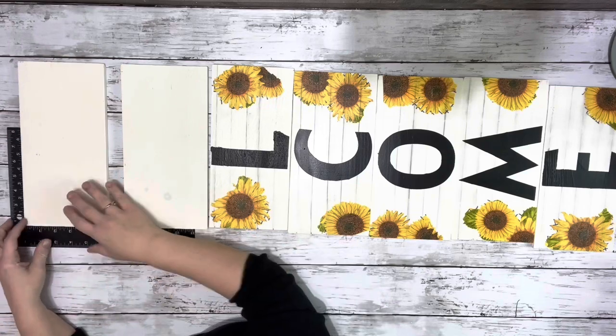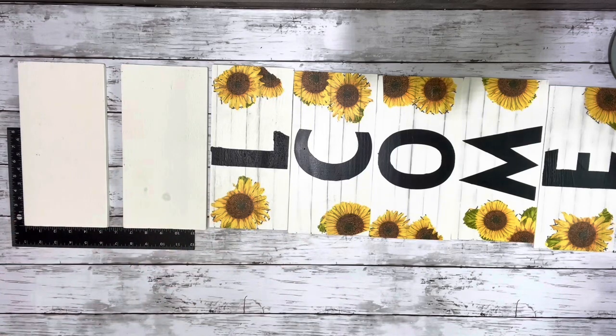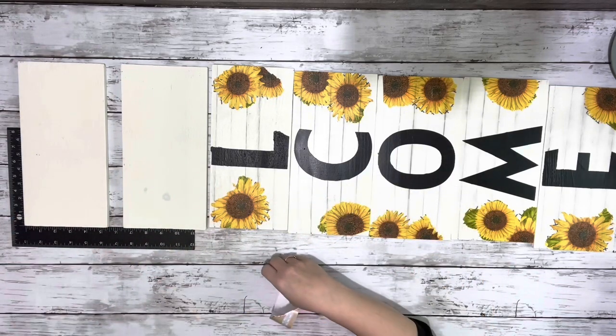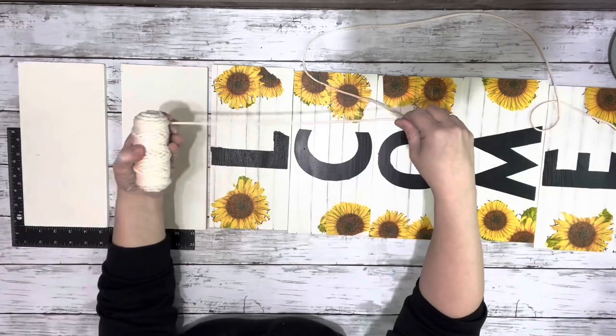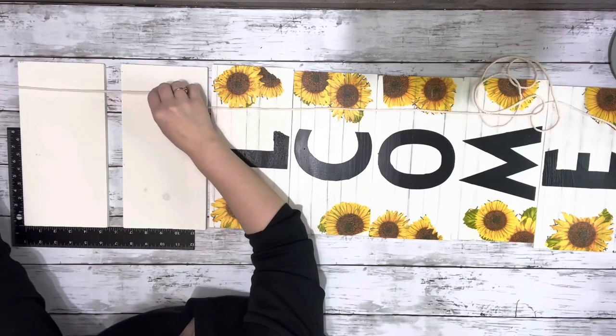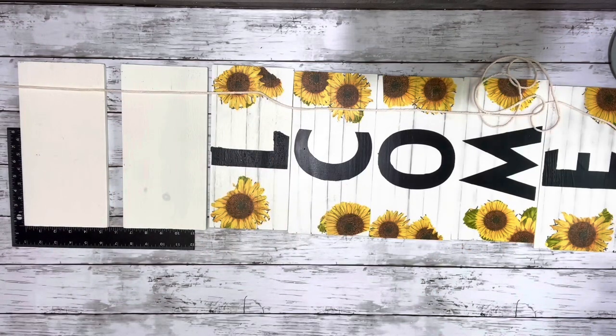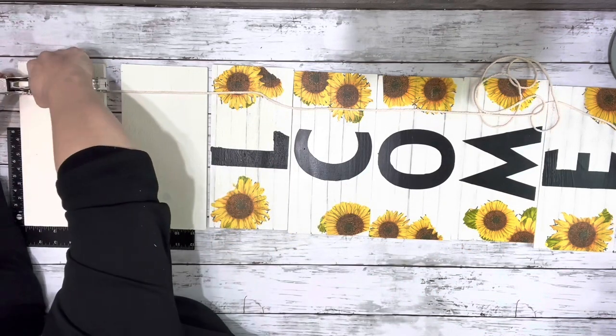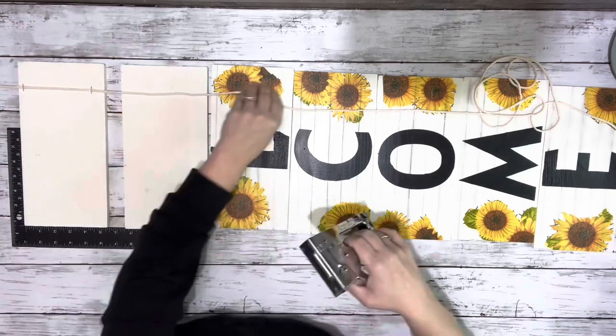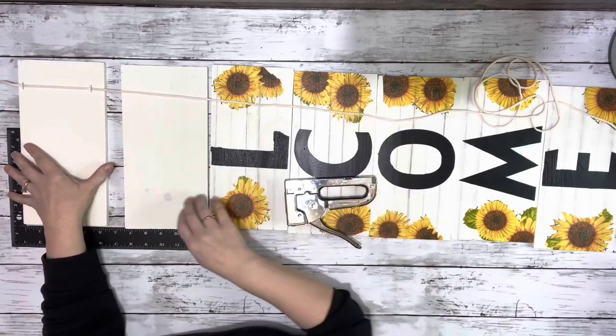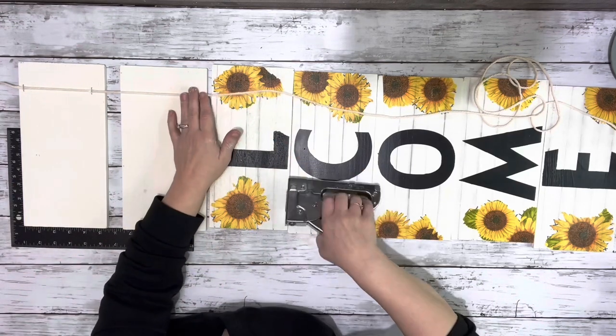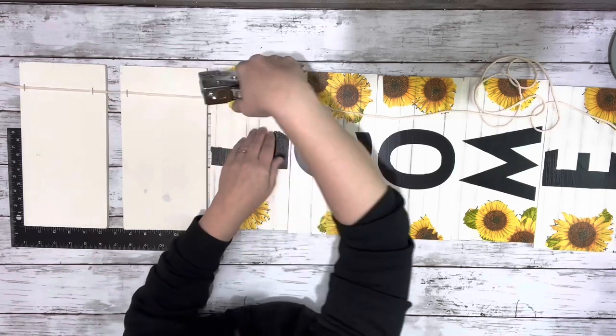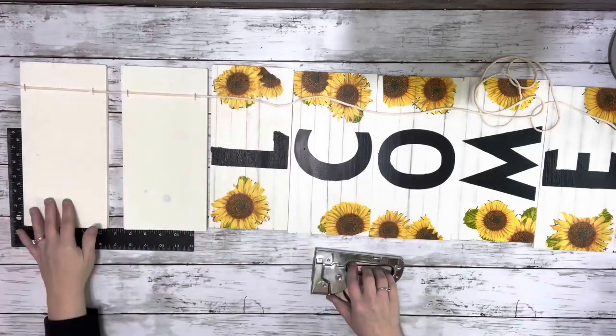And once they were all done, I started by flipping them over, and I used macrame rope from Dollar Tree. I took off enough rope that it would go the entire length of one side. Stapled my first piece down on the top one. And I'm using my square to make sure they're nice and even, and they are going to be an inch apart.